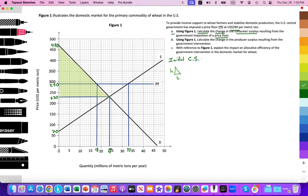So let's calculate that. The initial consumer surplus. So first let's figure out the height. The height is going to be equal to 470 minus 230. So 470 minus 230 is going to give me the height. And that height is 240.